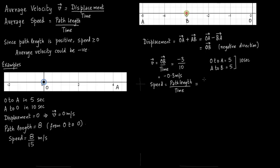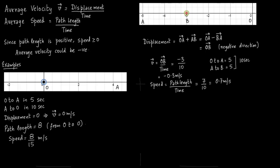So the path length now is you go from O to A which is 5 and then from A to B which is 2. So 5 plus 2 is 7 and time is 10 seconds. So you get 0.7 meters per second. Another example.